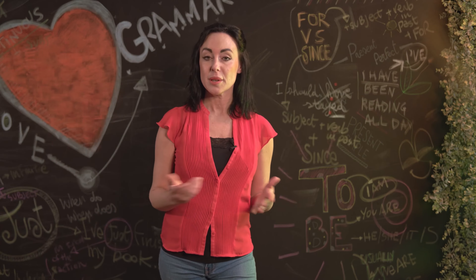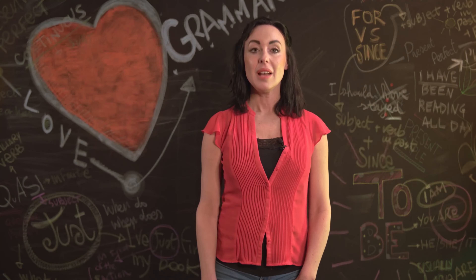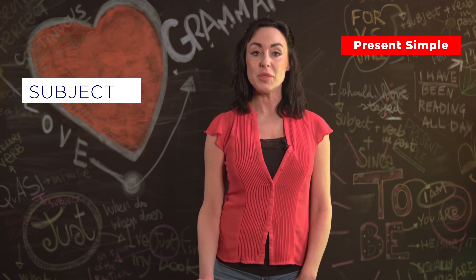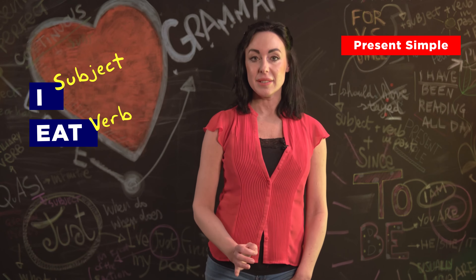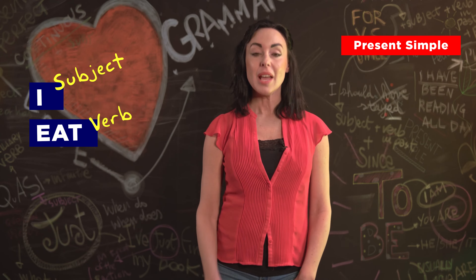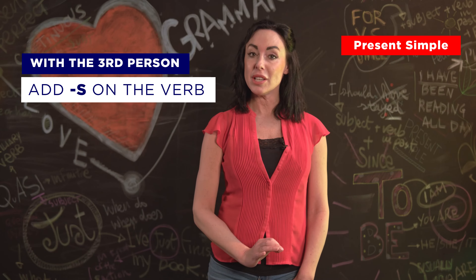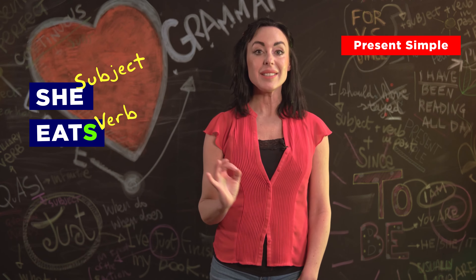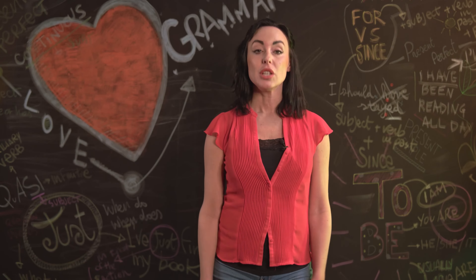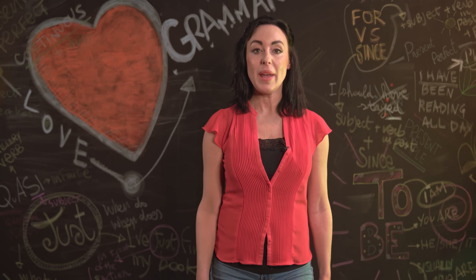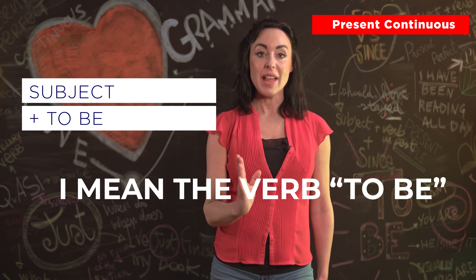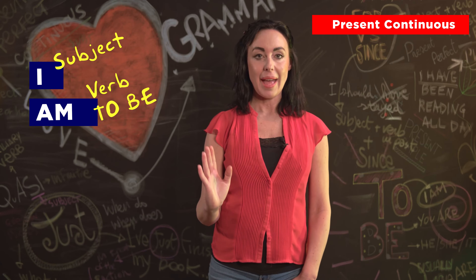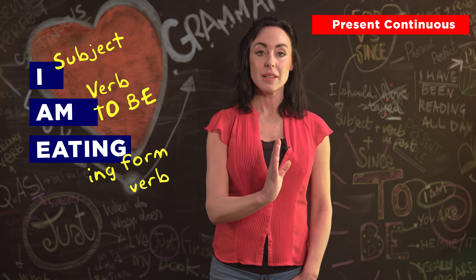We often use the present continuous with phrases like 'now' or 'at the moment.' The present simple is formed with the subject and the verb: 'I eat pizza.' Remember, with the third person you have to add an -s on the verb: 'she eats pizza.' To form the present continuous, we have subject + verb to be + the -ing form of the verb: 'I am eating pizza.'